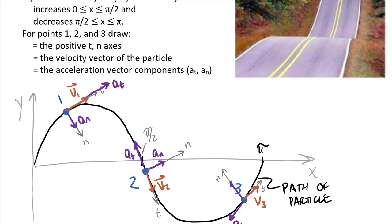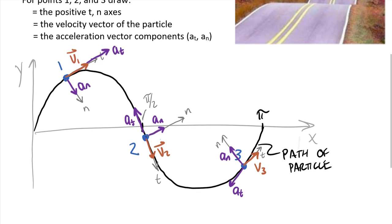For point 3, it's similar to point 2. We have the tangent axis, the normal axis, and velocity v3 in the tangent direction. The particle is still slowing down, so tangential acceleration a_t is in the negative tangent direction, and a_n points in the normal direction. To summarize: the tangent-normal axis system moves with the particle; the tangent direction lines up with velocity; normal acceleration is always toward the center of curvature in the positive normal direction; and tangential acceleration flips sign depending on whether the particle is speeding up or slowing down in magnitude.